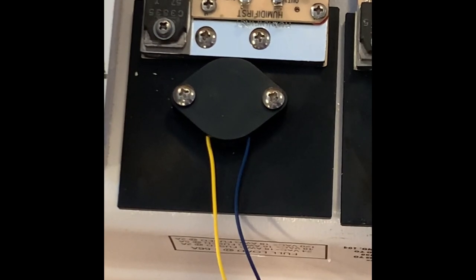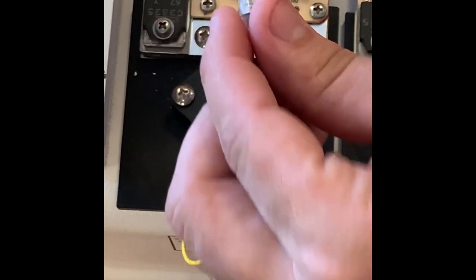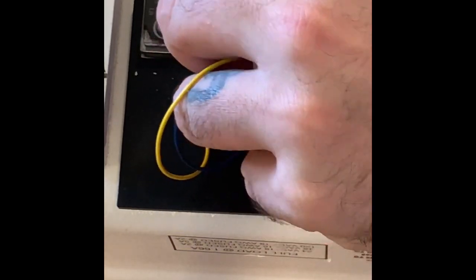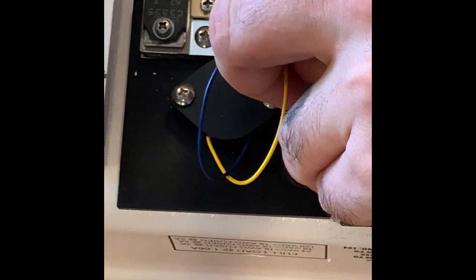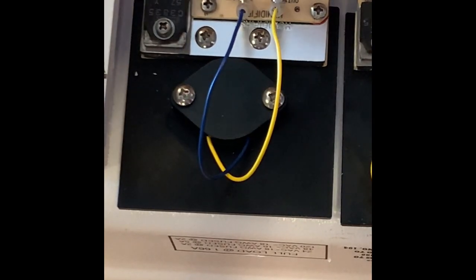Once you have done that, locate the leads coming off the transducer. Blue will go to out two and the yellow wire will go to out one. Make sure to put them in that order.